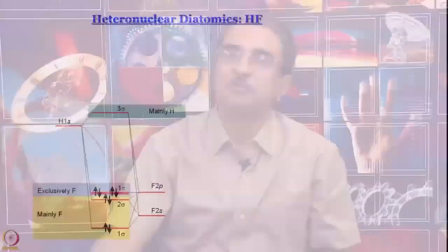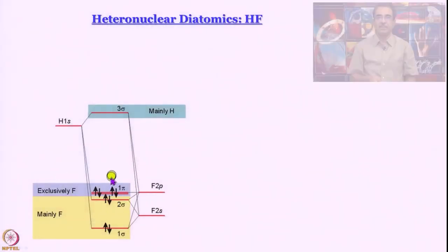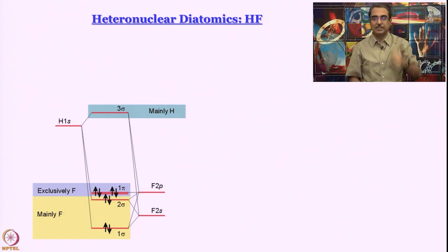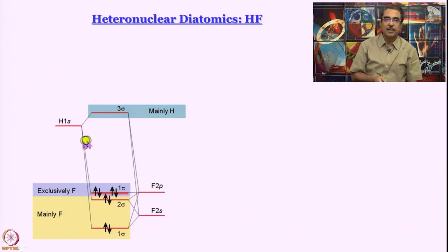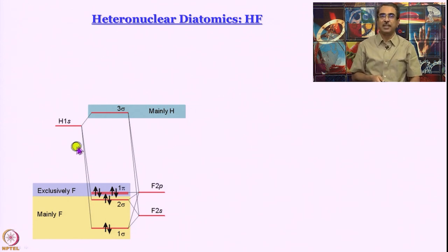These px and py orbitals are called non-bonding orbitals and they stay on fluorine. If you go back to the Lewis electron dot structure, you will remember that there are lone pairs on fluorine — these lone pairs reside in px and py orbitals, which are collectively called the 1pi orbital. The 1pi orbital is non-bonding and localized on fluorine. For the sigma orbitals, they do participate in linear combination, but their energies are so much lower that the bonding orbitals have contributions mainly from 2s and 2p orbitals of fluorine.